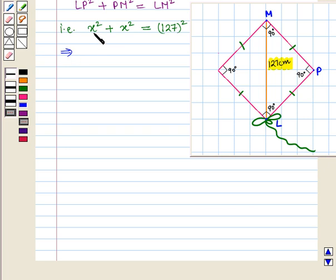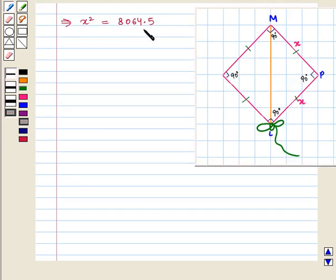This implies X² + X² is 2X² which is equal to 127² that is 16129, which further implies that X² is equal to 16129 upon 2, which implies that X² is equal to 8064.5. By rounding off this number we get X² is approximately equal to 8065.